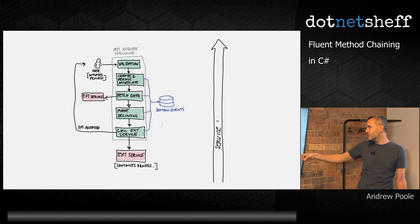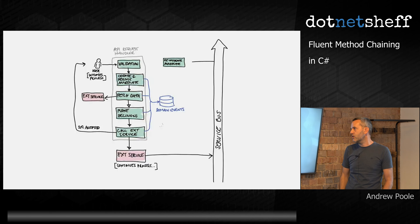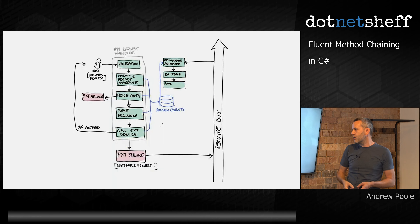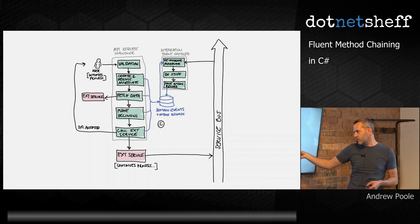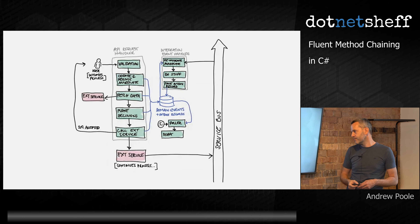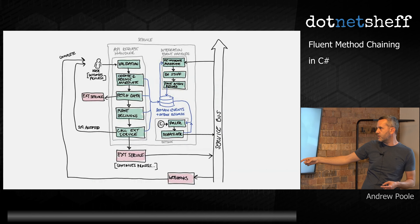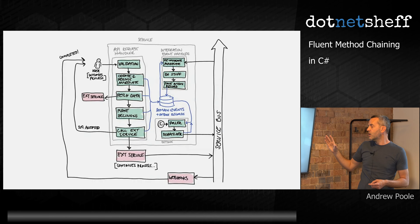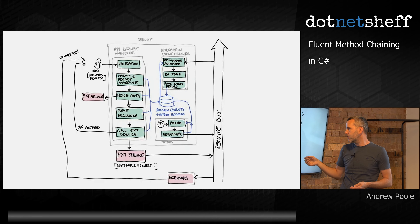Then we use something like service bus and some integration events. The external service or services do their job, we can then rehydrate our aggregate by handling that domain event, do some more stuff, perhaps save an outbox record into the database. This will be our integration event handler or message handler. Now we've got outbox records in our database, and then maybe we'll poll for those outbox records and dispatch some events back to service bus. That'll be the third part of our service. This is the service context I'm talking about. Meanwhile, some kind of webhook service may listen to that last outbox event and send the message back to the user.